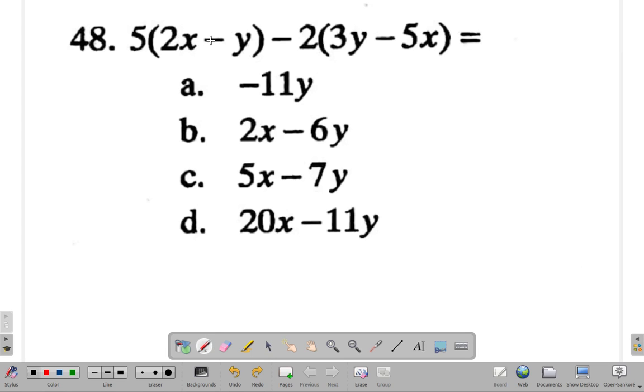5 times 2x minus y, minus 2 times 3y minus 5x equals. So 5 times 2x,